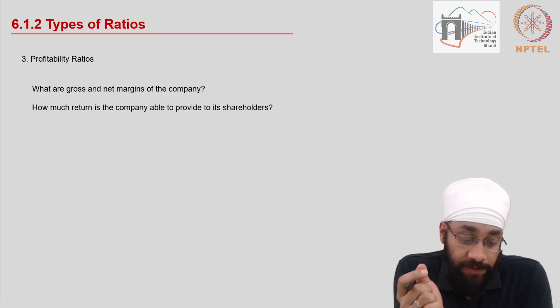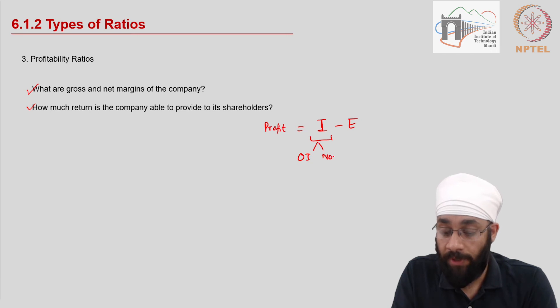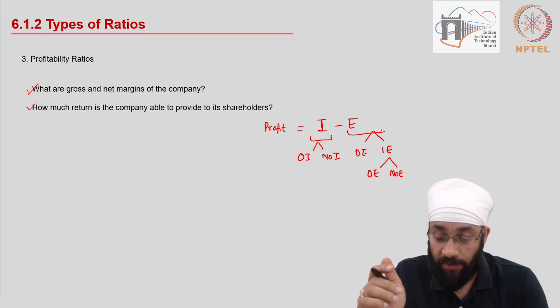The third category of indicators are called profitability ratios. The profitability ratios deal with questions such as what are the margins of the business? How much returns you are making? Now profit as we understand is equal to the incomes minus the expenses. The incomes are operating incomes and non operating incomes. The expenses can be direct expenses, indirect expenses and indirect expenses can further be operating expenses and non operating expenses.